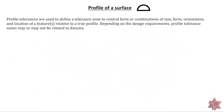Profile tolerances are used to define a tolerance zone to control a form, or combinations of size, form, orientation, and location of features relative to a true profile. Depending on the design requirements, profile tolerance zones may or may not be related to datums.